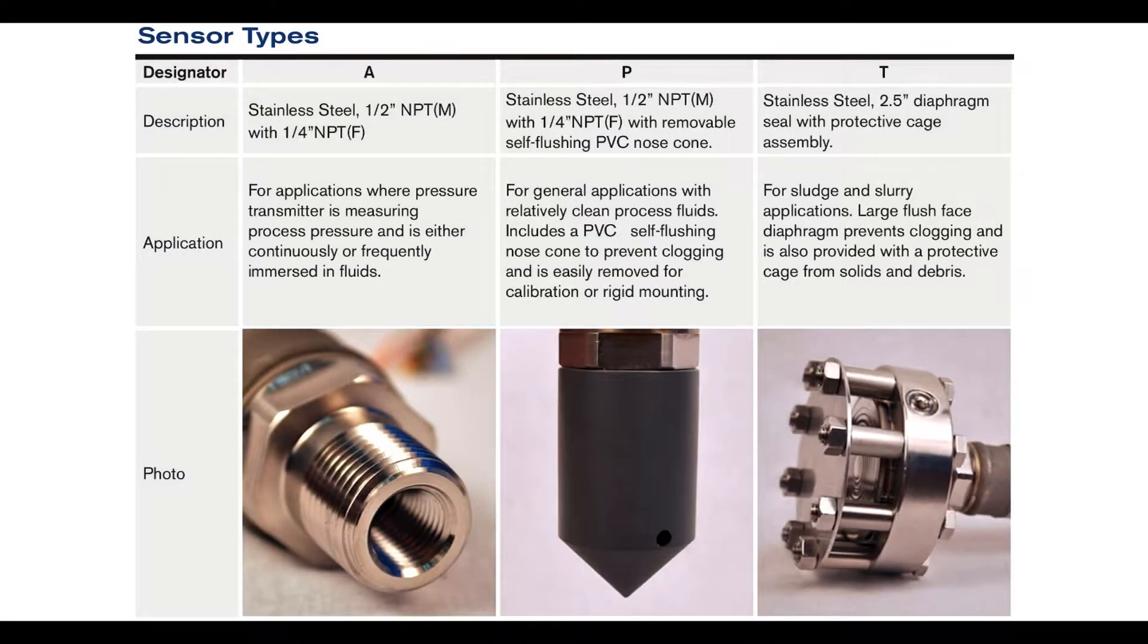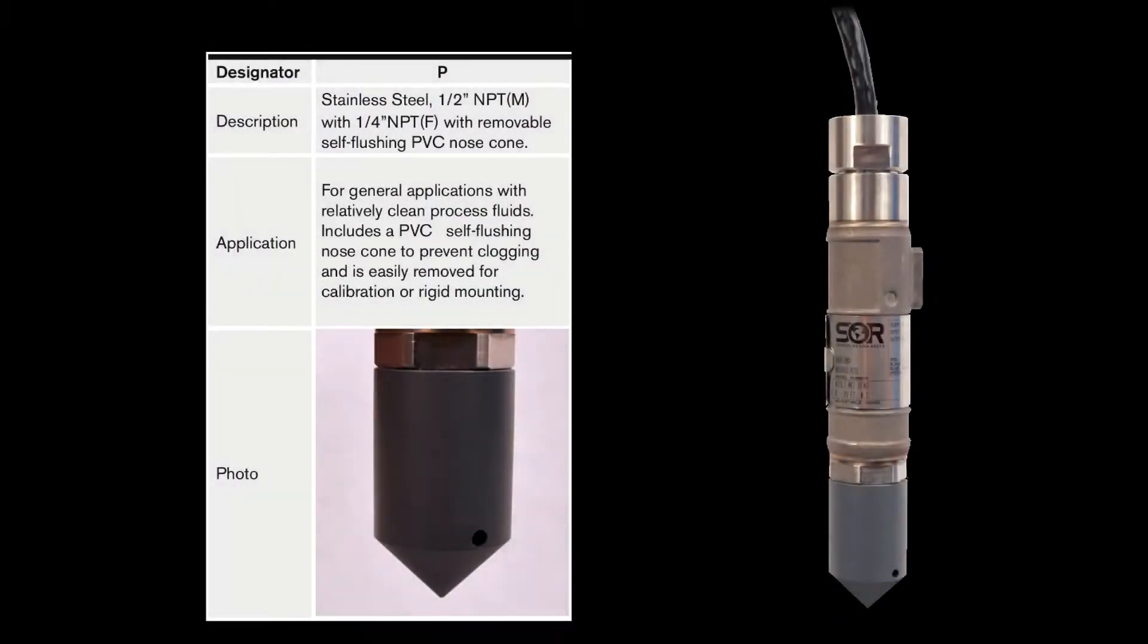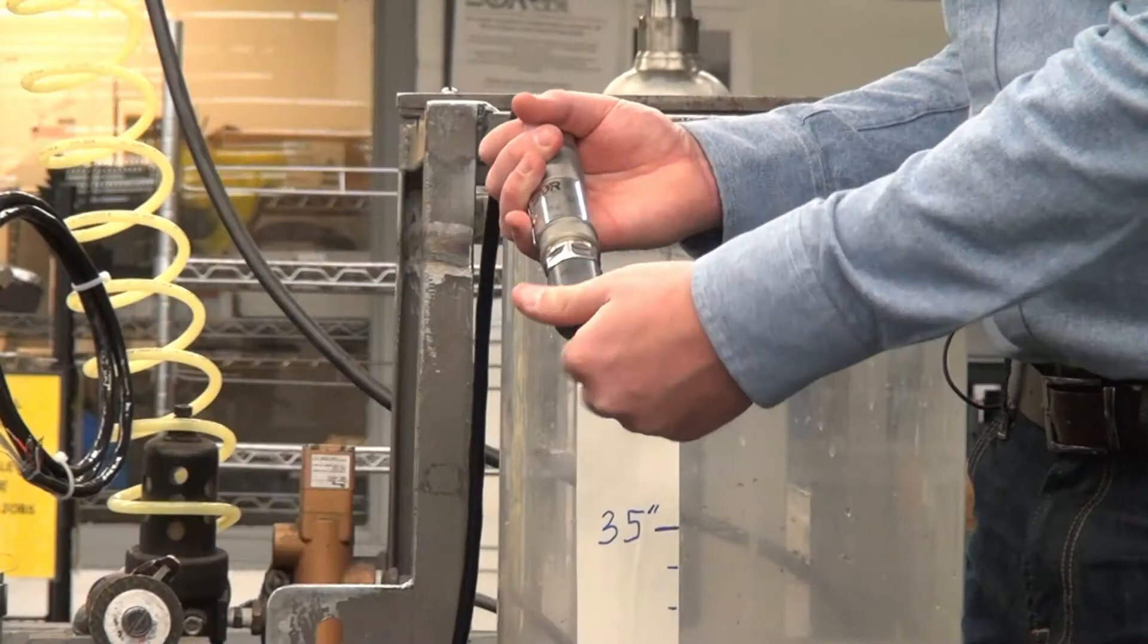There are three main types of process connections for the 815LT. For our standard process connection, we have our standard PVC nose cone option that is actually removable.